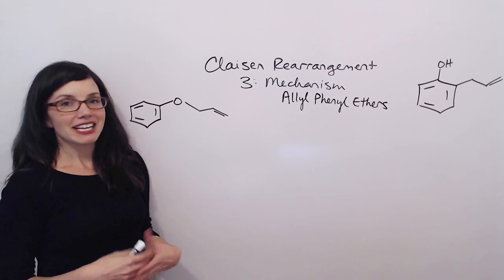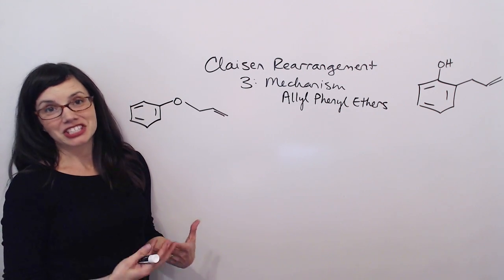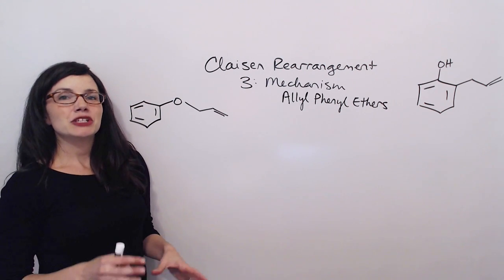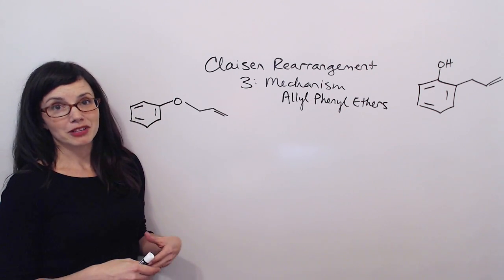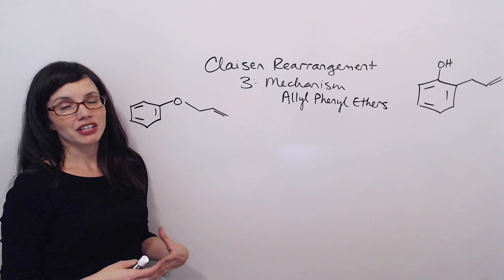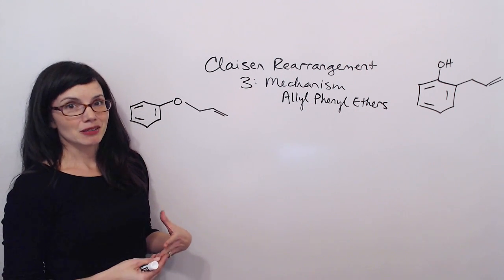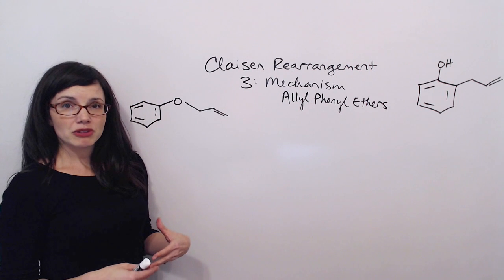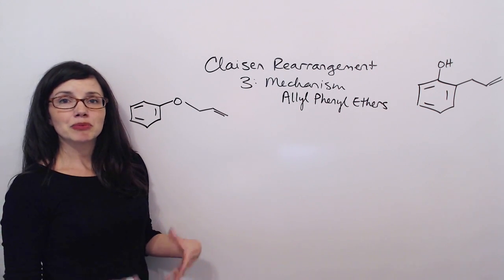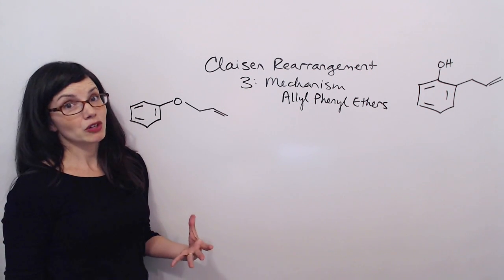Hopefully now you know how to identify the reactants that can actually do this reaction and you know a little bit of how to predict the style of product that's going to come from this reaction. But it's really important that you can actually do this mechanism in order to accurately predict product. So I'm going to take you through the steps of this mechanism and then we'll practice doing it on some more difficult molecules.